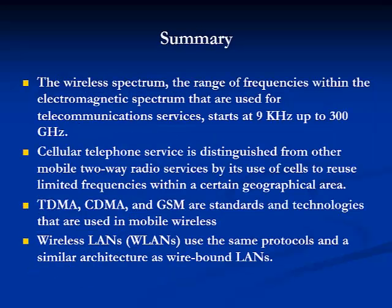In summary, we have covered in this module the wireless spectrum — the range of frequencies within the electromagnetic spectrum used for telecommunication services starting at 9 kHz and ending at 300 GHz. Cellular telephone service is distinguished from other mobile two-way radio services by its use of cells to reuse limited frequencies within a certain geographical area. TDMA, CDMA, and GSM are standards and technologies used in mobile wireless. Wireless LANs use the same protocols and a similar architecture as wire-bound LANs. This completes Module 9. Please take your quiz, and I'll see you in Module 10.